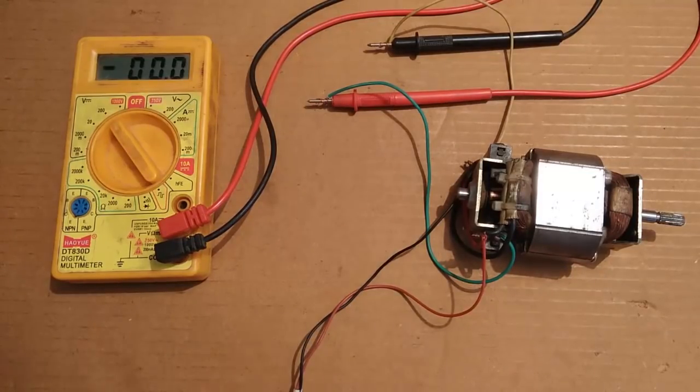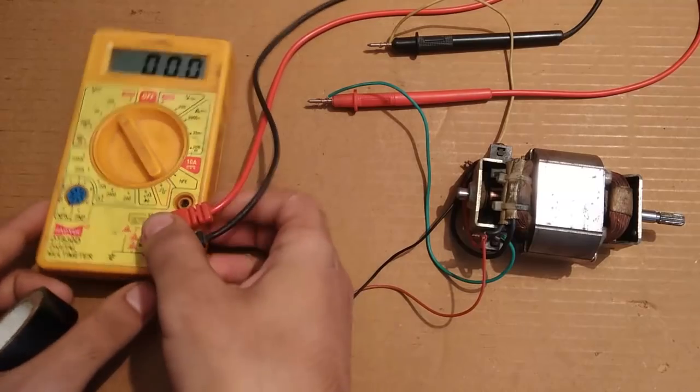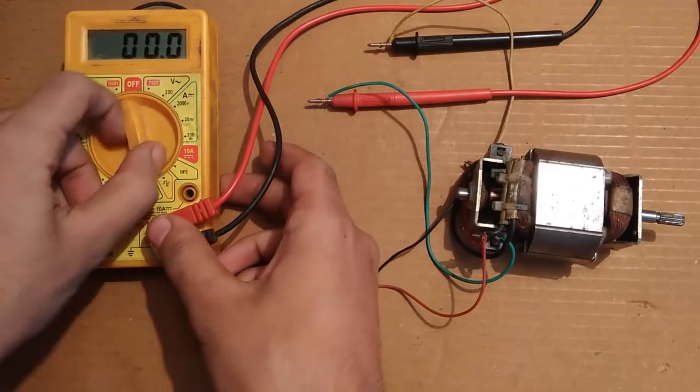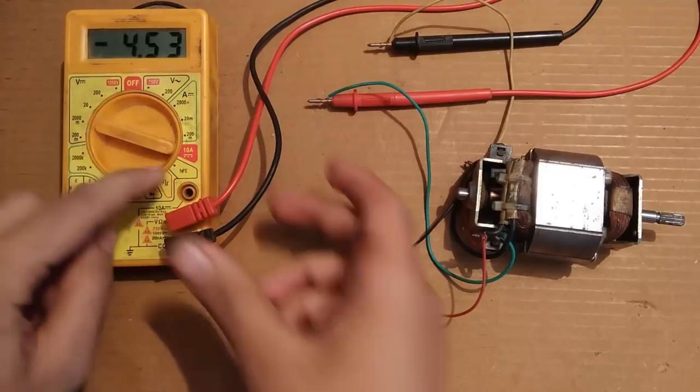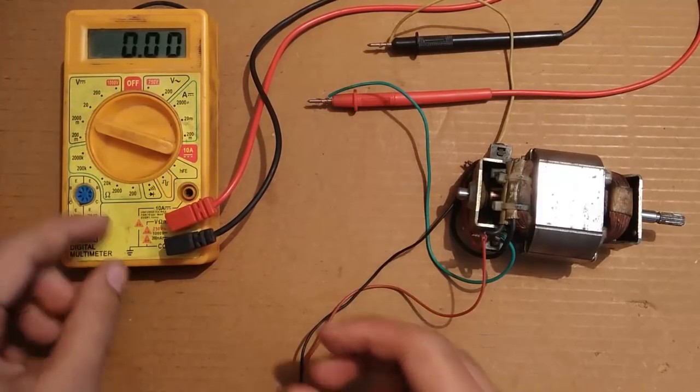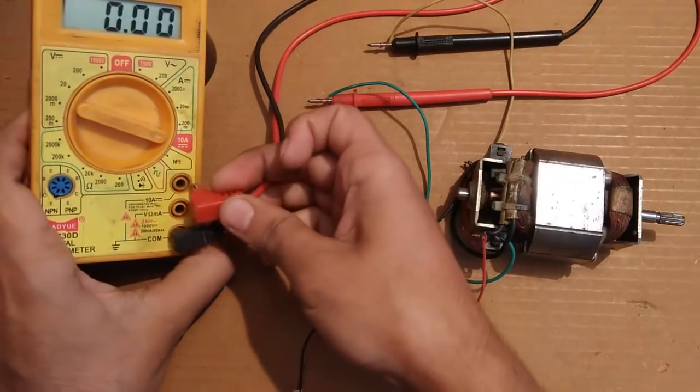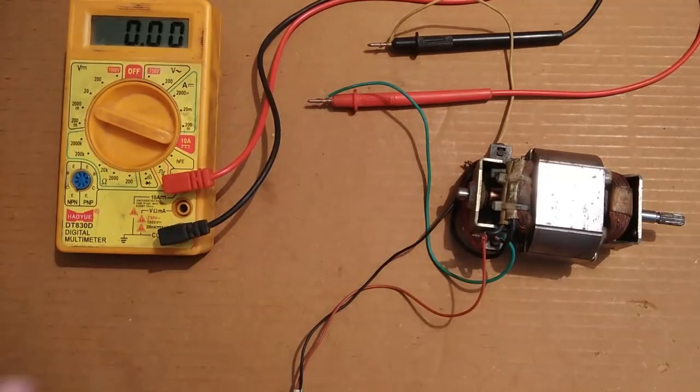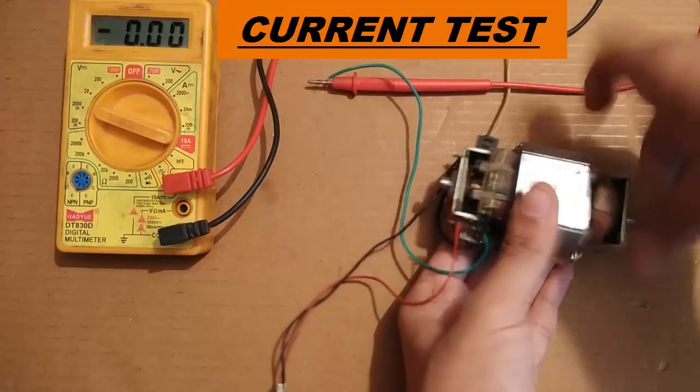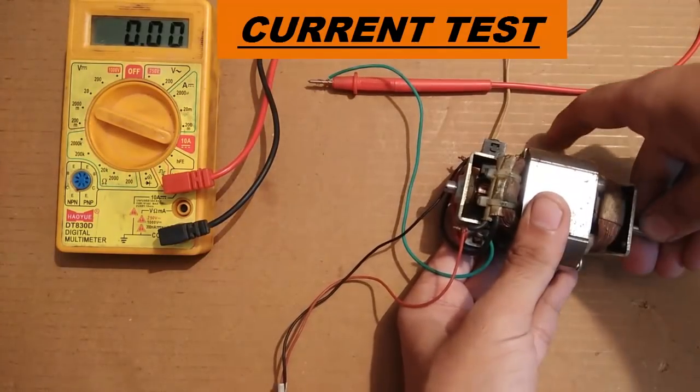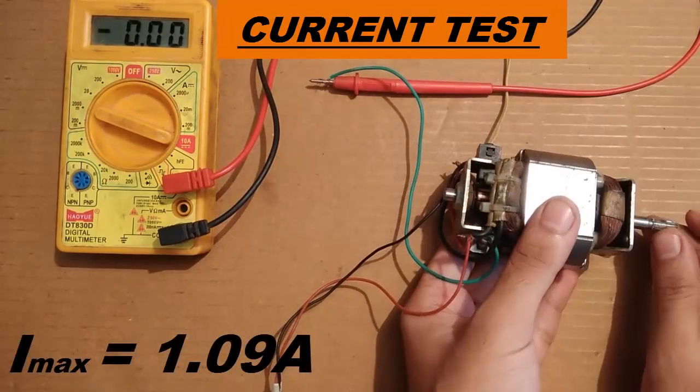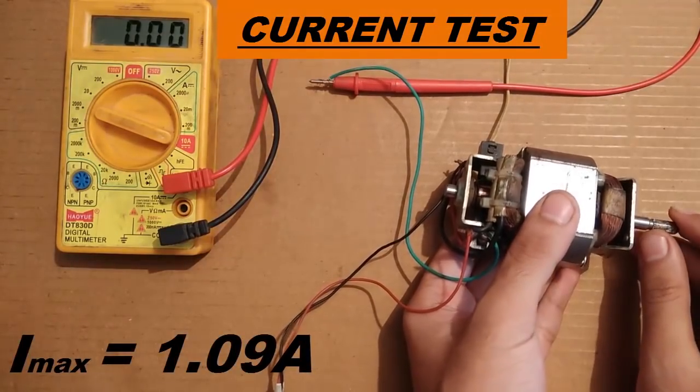Now I am going to do the current measurement. It is pointing towards the 10 amperes current mode. Now I have to remove this red pinion. Connect it to the upper terminal. So everything is correct. You saw that I just produced 1.09 amperes.